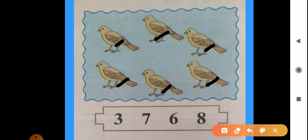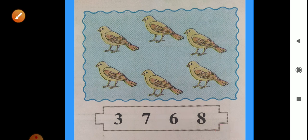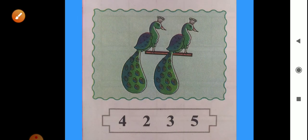Then which number we circled? Good. Number 6. We should circle the number 6. Okay. So look next exercise. Here are peacocks.